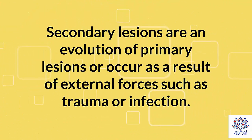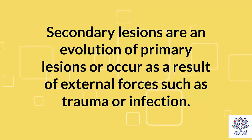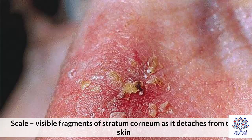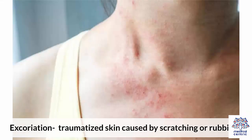Secondary lesions are an evolution of primary lesions or occur as a result of external forces such as trauma or infection. Scale are visible fragments of stratum corneum as it detaches from the skin. Crust is a rough surface made up of dried serum, blood, or pus. Excoriation is traumatized skin caused by scratching or rubbing.